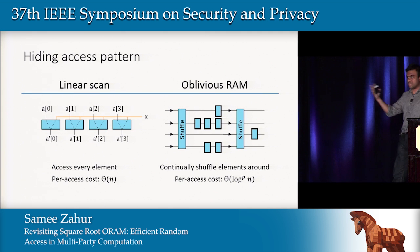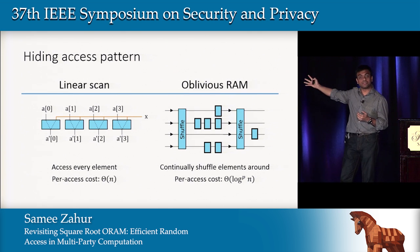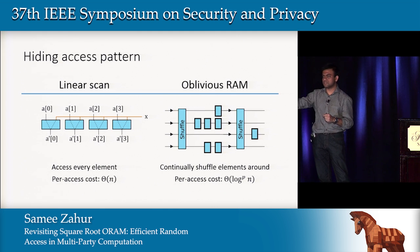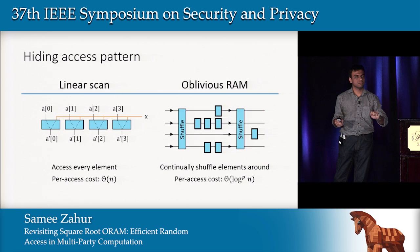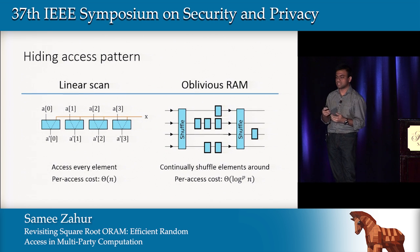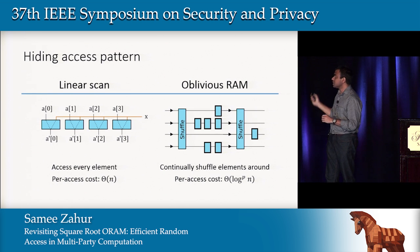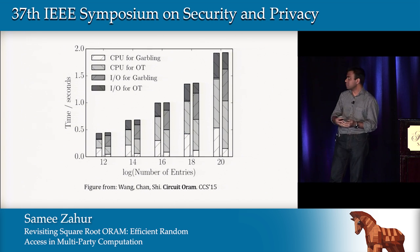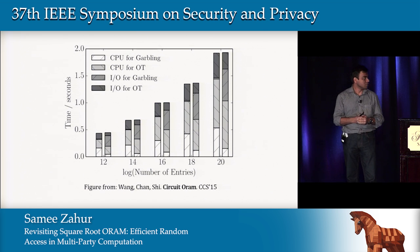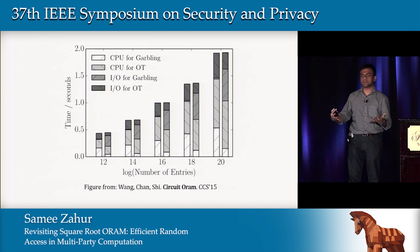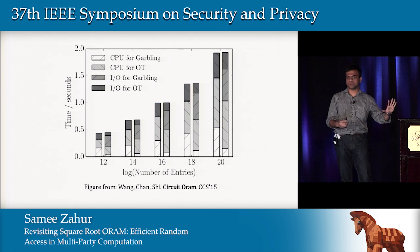The other approach, as the other speakers have talked about, is oblivious RAM. The idea is that you keep shuffling elements with every single access, so that when you reveal which element you're accessing, its physical location doesn't reveal its logical identity. That gives you access in polylogarithmic time. The state-of-the-art we'll be comparing against is the Circuit ORAM paper from last year's CCS by Wang, Shi, and others — the fastest there is for MPC applications.